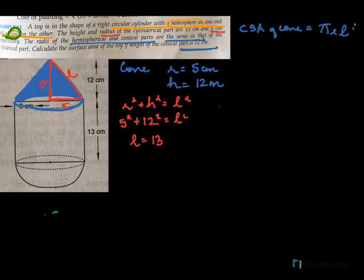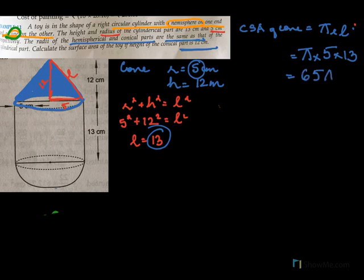Solving, l = 13. So the CSA of the cone = π × r × l = π × 5 × 13 = 65π. We're done with the cone.